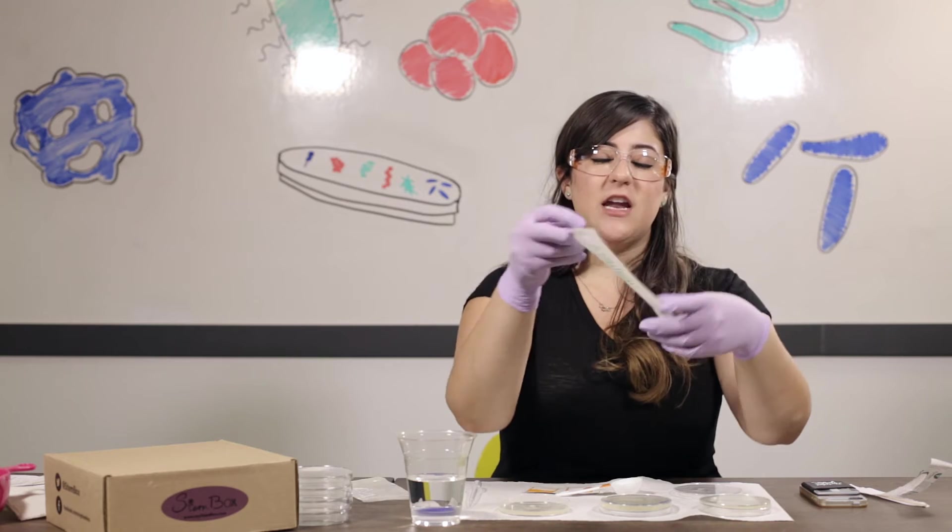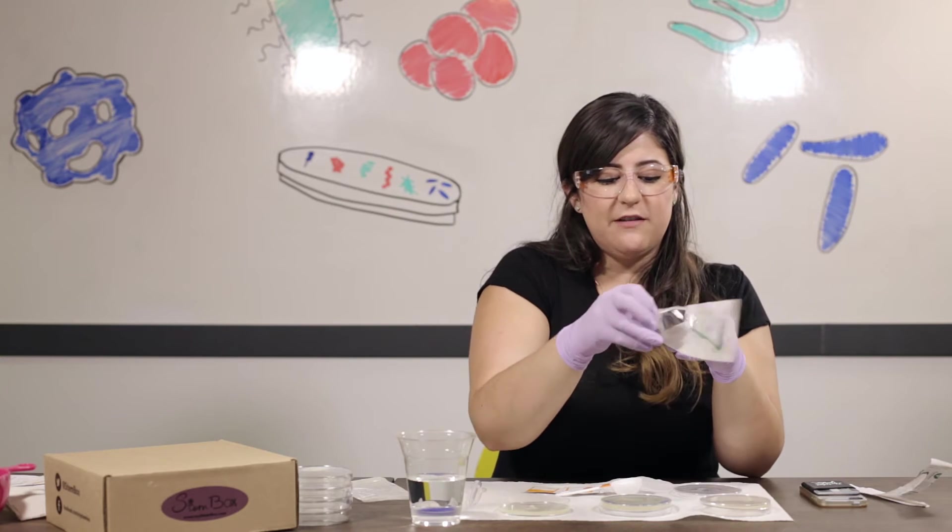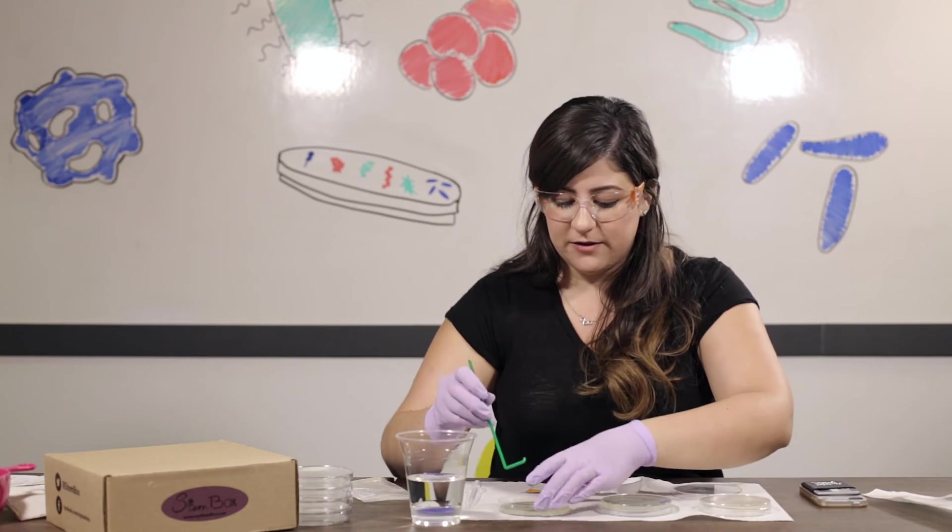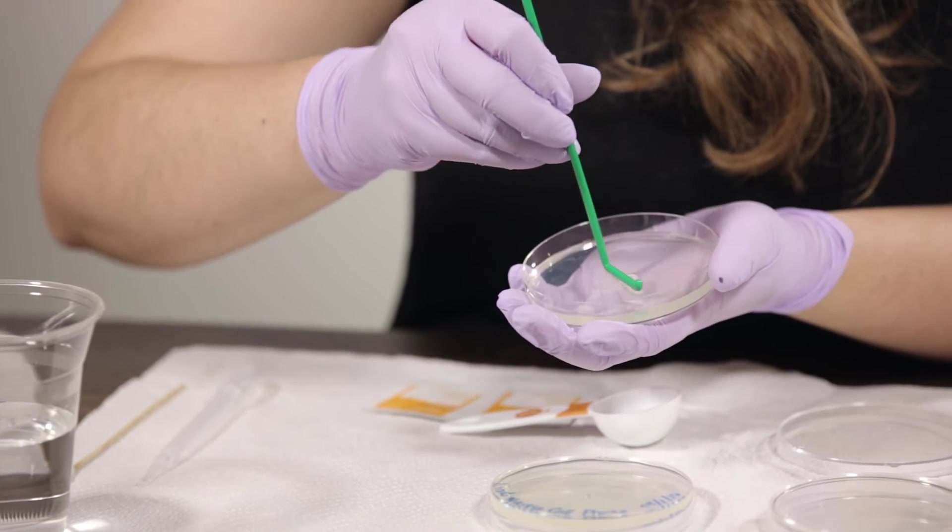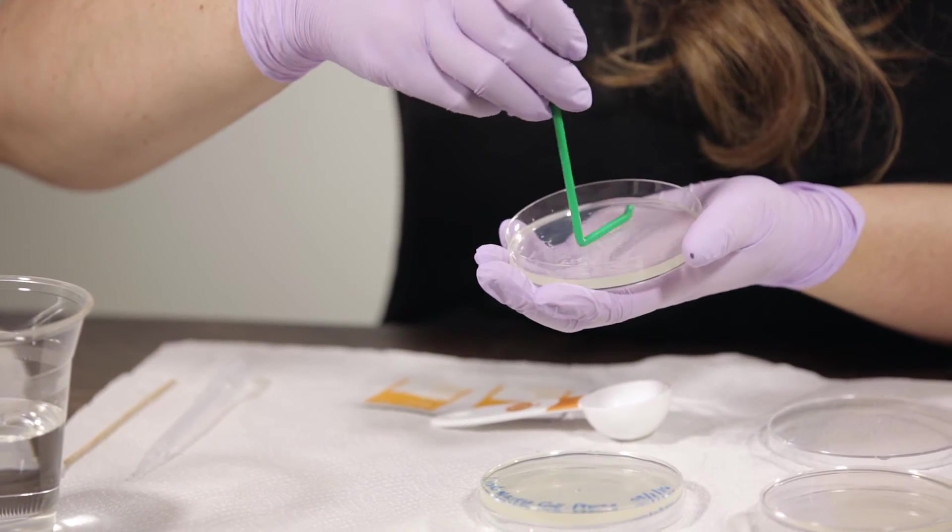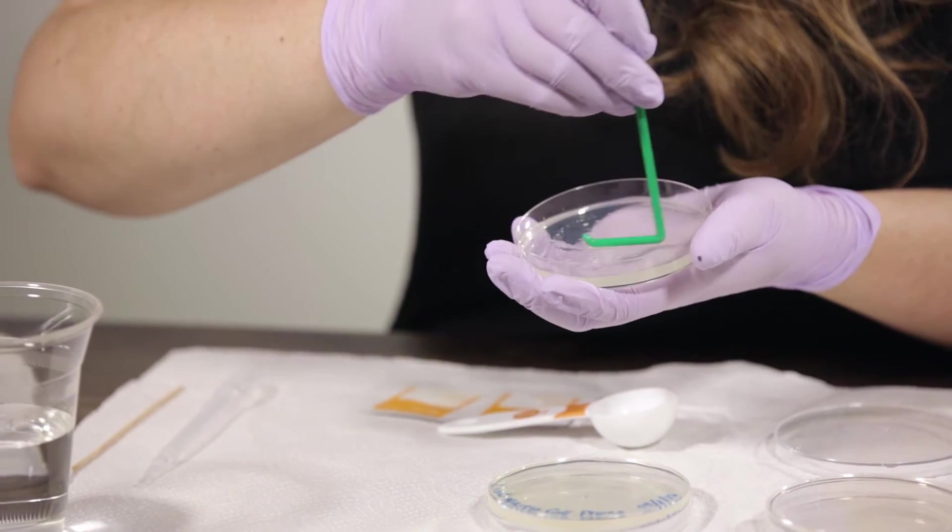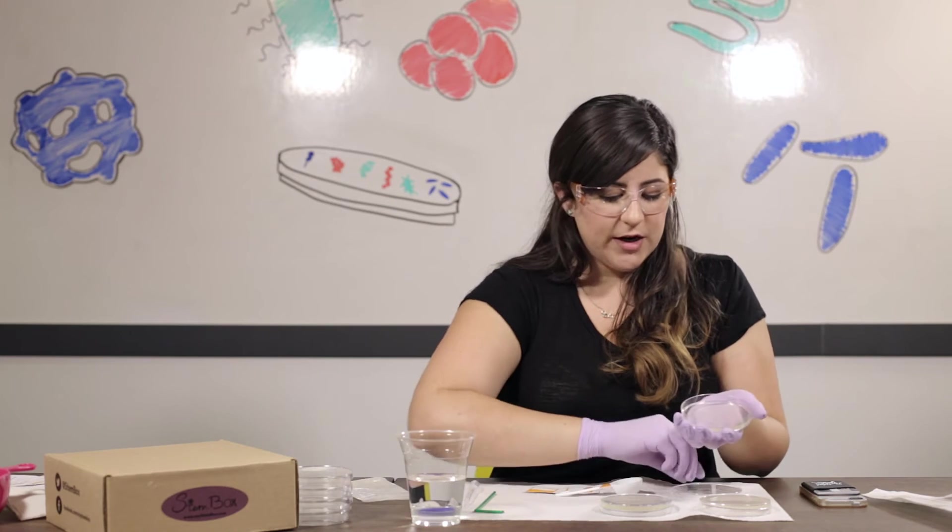And then we're gonna go ahead and use our L spreader. Now the L spreader is a really cool tool that'll evenly spread out the bacteria to make a lawn on the surface of your plate. So I'm just gonna start here and I'm gonna just gently glide it over the surface. And I'm gonna spin it around a few times. Look at all that Kina spit. That should be good. Nice and slimy. We're gonna cap it.